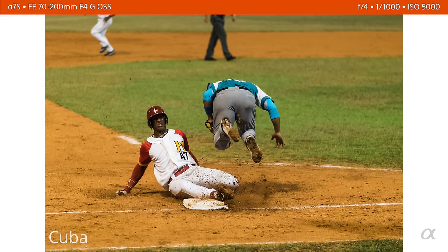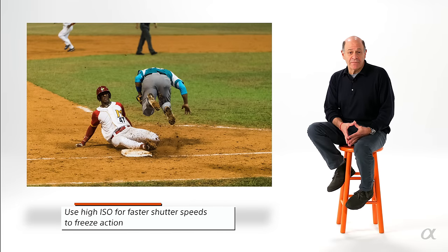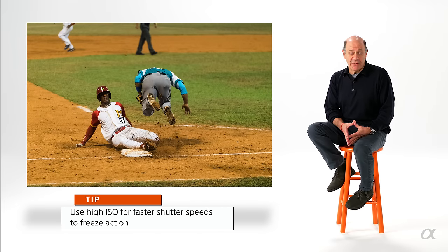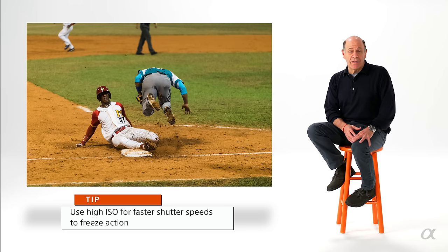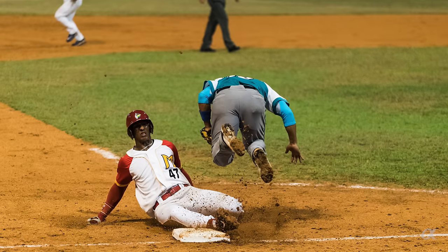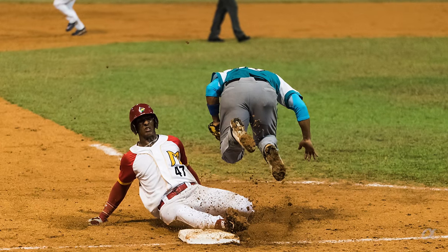And I was shooting at a night game with the 70-200 and I wanted to cover the action. To do this, to capture the action and to freeze it, I had to use a high shutter speed. And because the stadium is not so well lit, I had to boost my ISO up to about 5,000. And with these Sony cameras, 5,000 is a piece of cake.